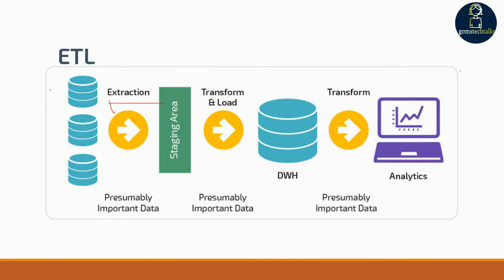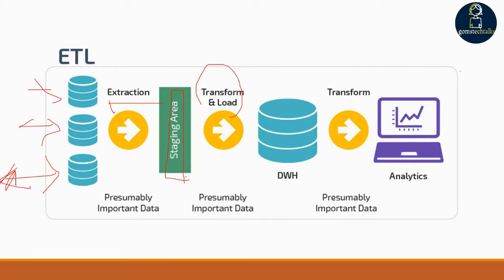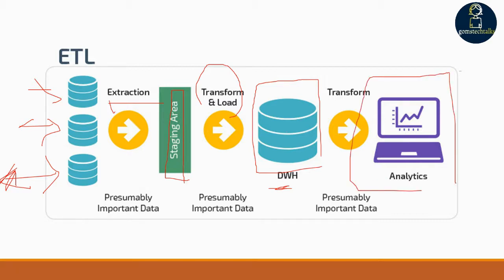In the ETL process, you extract data from various data sources — whether they are in the same format or different formats. You then transform and load it. This intermediate area is called the staging area. Once transformation is complete, the data is loaded into the data warehouse (DWH), and finally used for analysis and insights.